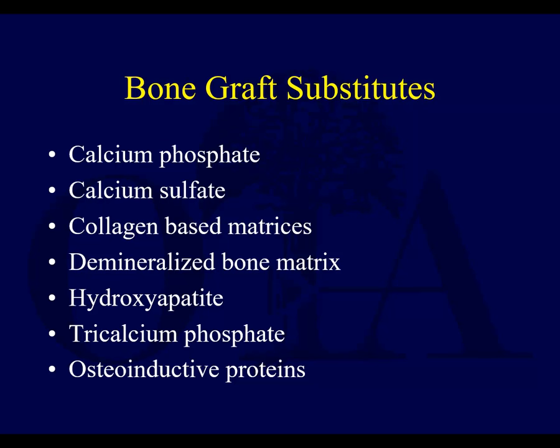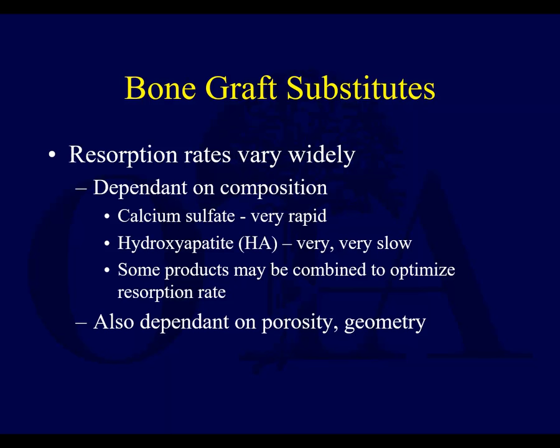Here's a list of some of the graft substitutes you may see: calcium phosphate, calcium sulfate, collagen-based matrices, DBMs, hydroxyapatite, tricalcium phosphate, and osteoinductive proteins. The resorption rates vary widely and depend to some degree on the composition. Calcium sulfate resorbs very quickly, hydroxyapatite is very slow, and calcium phosphate is somewhere in between. This is also dependent on porosity and geometry, so within one type of composition this may vary from commercial product to commercial product.